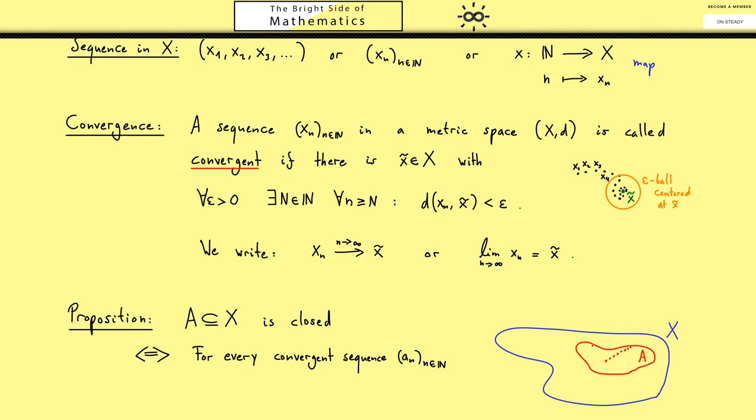So it's a sequence inside A and usually one uses the sloppy notation writing it down as a subset of A. The important thing here is of course we have a convergent sequence but only in the sense of the definition. So it's a convergent sequence in space x so it has a limit inside x. However for the proposition we need more, we need that the limit that we know exists is also an element of A.